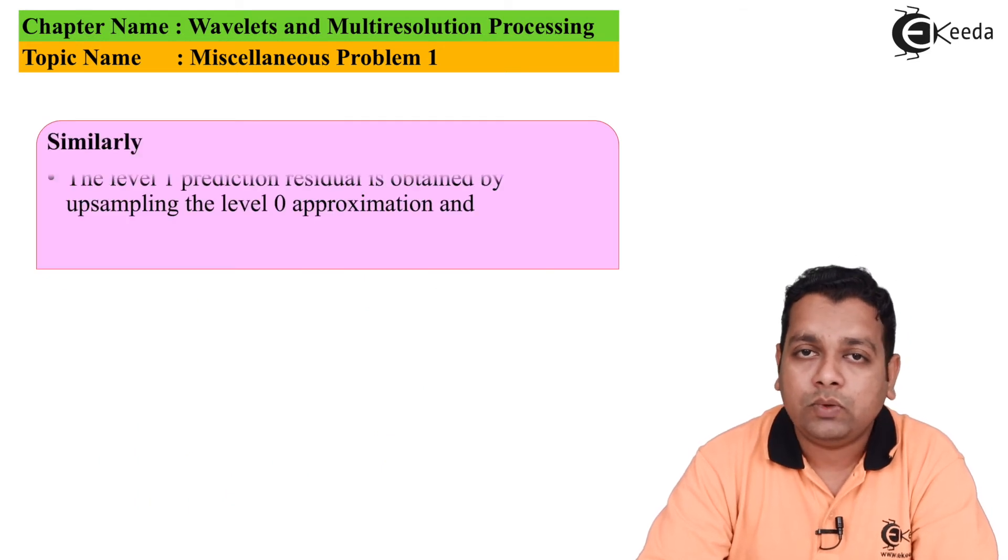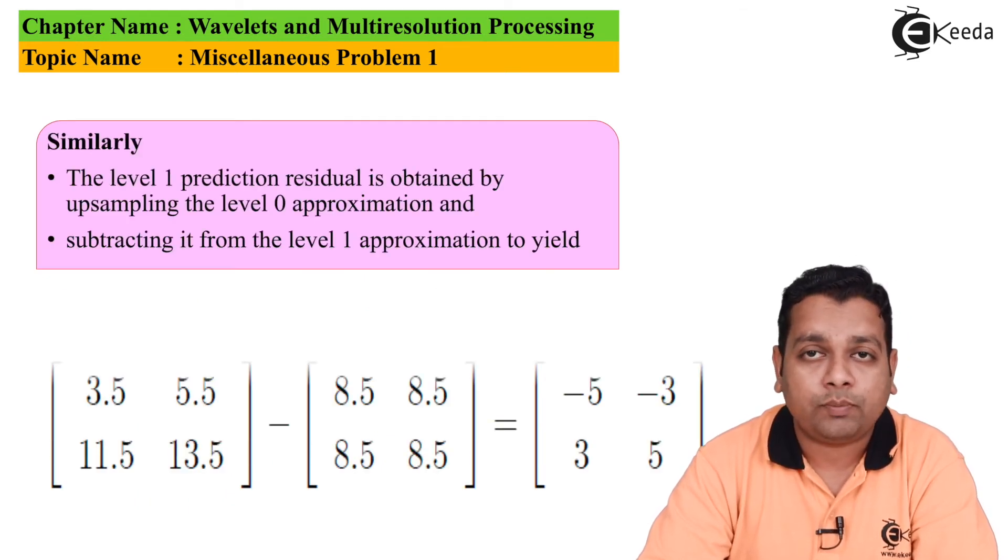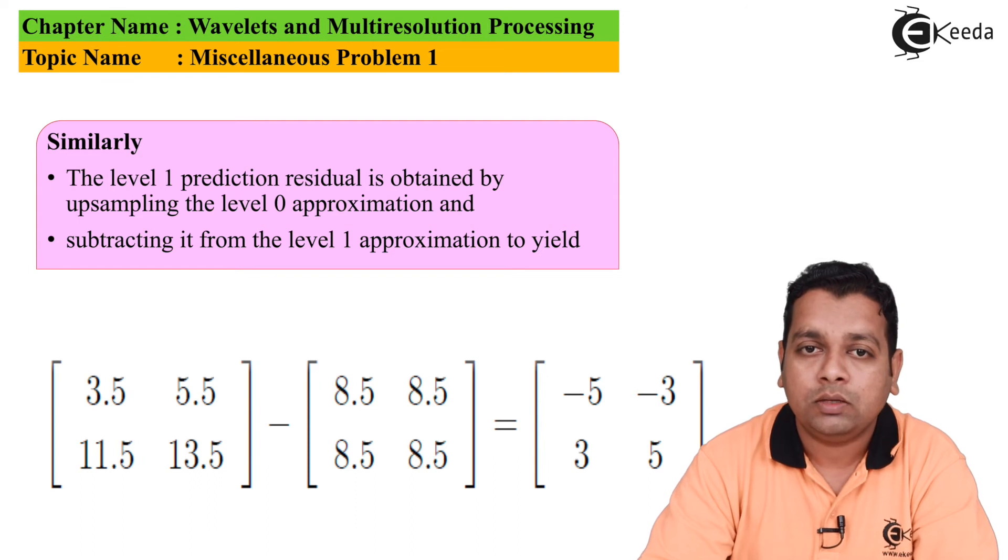Similarly, the level 1 prediction residual is obtained by up sampling the level 0 approximation and subtracting it from the level 1 approximation. We subtract the matrix having constituent elements 8.5 at these four places with dimensions 2 by 2 from the matrix having 3.5, 5.5, 11.5, 13.5. The resultant is -5 in the first row first element, second element is -3, the next row has 3 and 5.